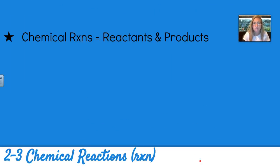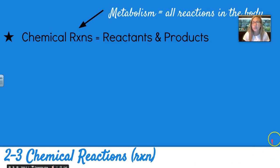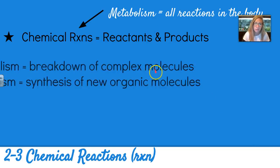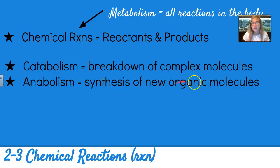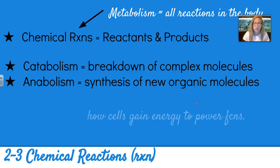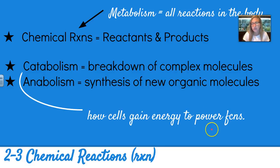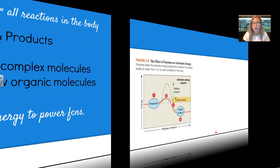Section 2-3 gets more into chemical reactions. Remember that chemical reactions have reactants and products. All the reactions in the body are known as metabolism, and they can have different products. Catabolism is a breakdown of complex molecules, and anabolism is a synthesis of new organic molecules — just be able to recognize those terms. Catabolism is how cells actually gain energy to power the functions of the body.